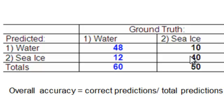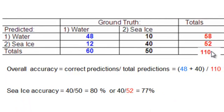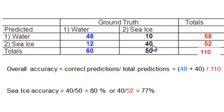The total number of correct predictions were 48 plus 40, or 110. Our overall accuracy is the total number of correct predictions divided by the total number of ground truth points — 48 correct for water plus 40 correct for sea ice, divided by 110.